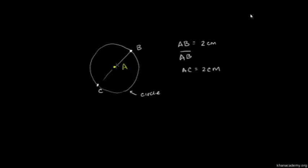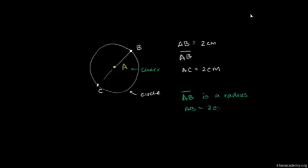First of all, let's think about this distance — one of these line segments that join A, which we would call the center of the circle. So we'll call A the center of the circle, and it makes sense just from the way we use the word center in everyday life. Line segment AB connects the center and a point on the circle itself. The circle itself is all the points that are equal distance from the center. Any line segment that connects the center to a point on the circle we would call a radius. So the length of the radius AB is equal to 2 centimeters.